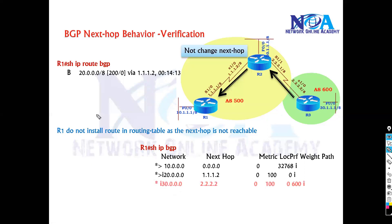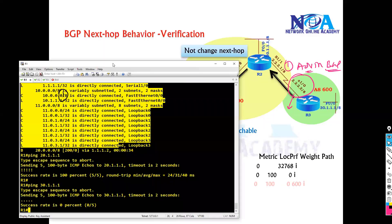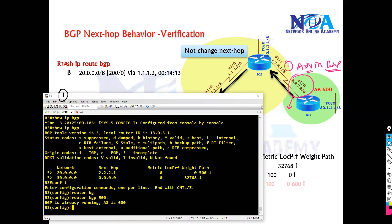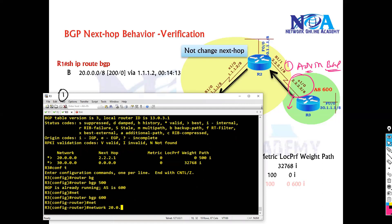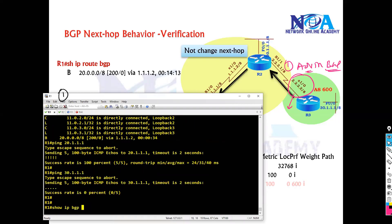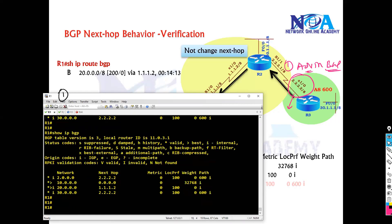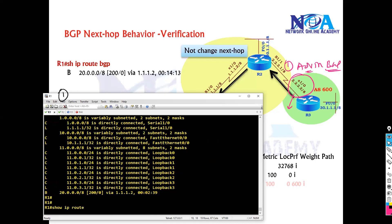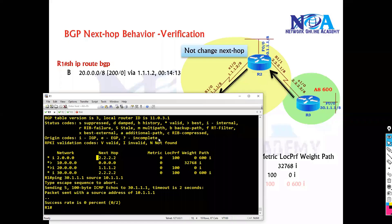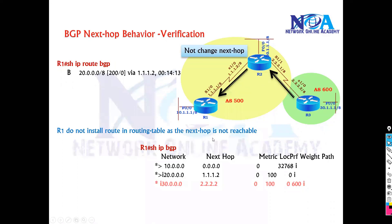To fix this there are two possible solutions. One solution is to simply advertise the next-hop address 2.2.2.2 in BGP — go to router 3 and advertise that route in BGP so router 1 can learn it. But again it's not easy to advertise all internet-facing interfaces. So the alternative and better solution is to use the next-hop-self command.